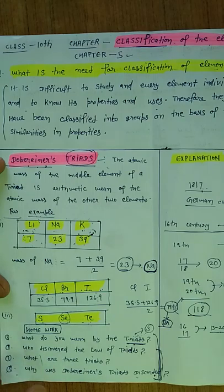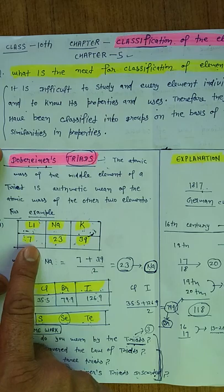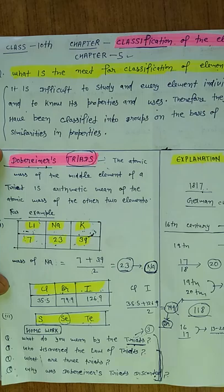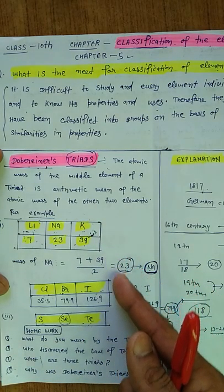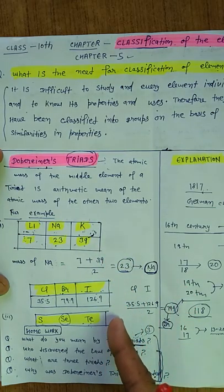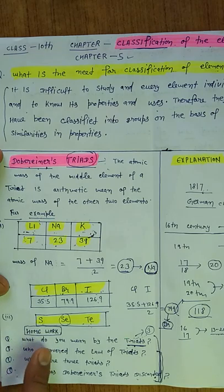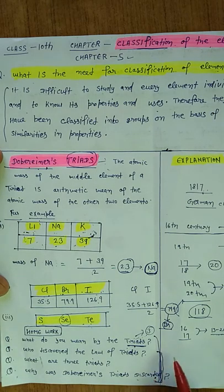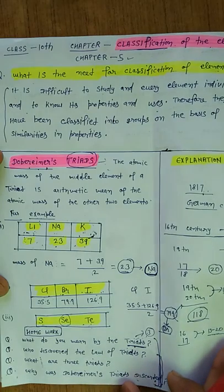To aapne is ka answer dena hai ki jo Dobereiner triad tha sirf lithium triad hi possible ho saka, chlorine triad hi possible ho saka aur sulfur triad hi possible ho saka. Means Dobereiner ka jo classification tha sirf in elements ko hi cover kar paya. Kisi bhi other elements ka classification, kisi bhi other elements ka justification is triad ke dwara possible nahi ho saka. To aapne in 4-5 questions ko bahut achhe se solve karna hai aur aapne notebook ke andar is ko note karna hai.